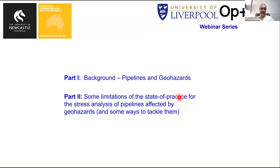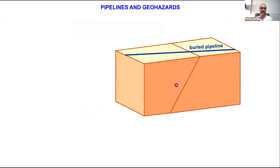My talk comprises two parts. I'll start by providing context on the geotechnical hazards affecting pipeline infrastructure and will briefly present the tools we use in practice to verify that our pipes will be able to accommodate relevant accidental actions without failure. That will allow you to see how modeling of interaction between pipelines and the surrounding soil fits within the workflow of pipeline design. Next I will present some limitations of these analysis tools and some ways to tackle these limitations, as well as problems we are still trying to solve.